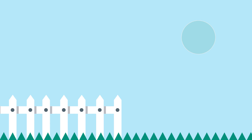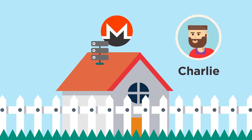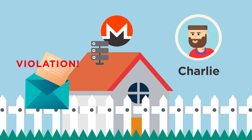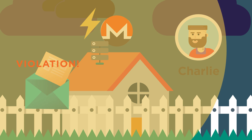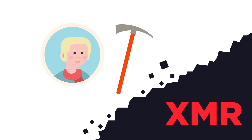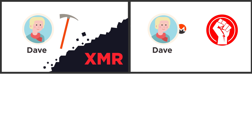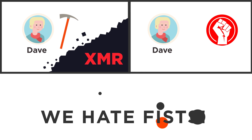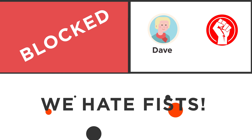Suppose Charlie wants to support the Monero network by running a full node at his home. After a few weeks, he receives a cease-and-desist letter from his Internet service provider, claiming that running a node is a violation of the terms of service. Or consider this: suppose Dave is an operator of a mining pool that donates a portion of block rewards to a political party or controversial cause. Other nodes could purposefully reject his solved blocks to express their disagreement with his political or social views.